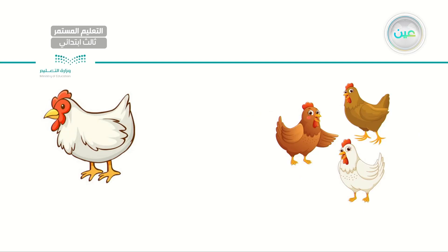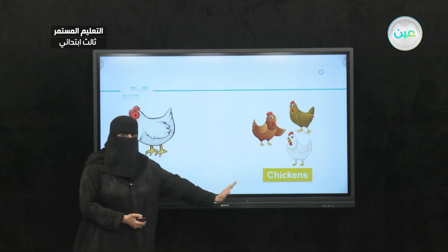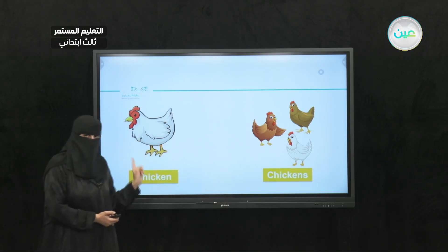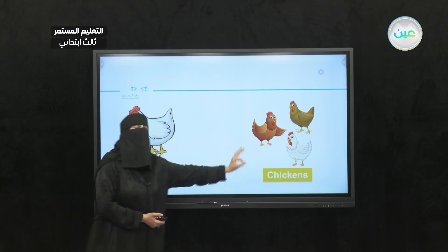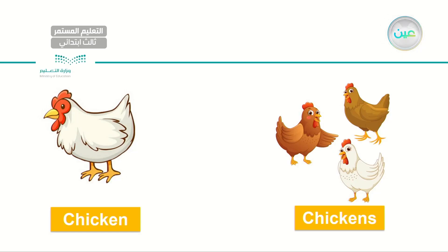How about this one? Here I have again singular and plural. I have a chicken and I have three chickens. One chicken and three chickens. So let's read together: chicken. Chickens. Very good, my dear student.